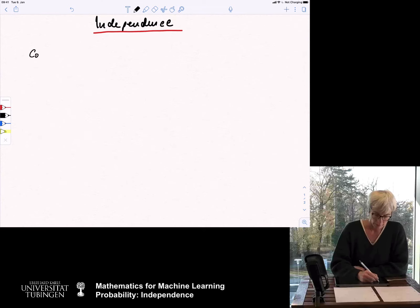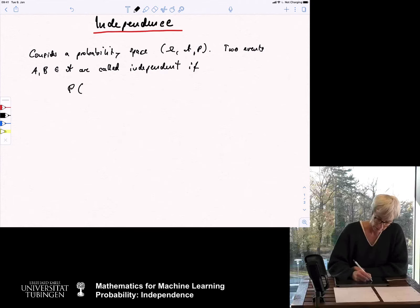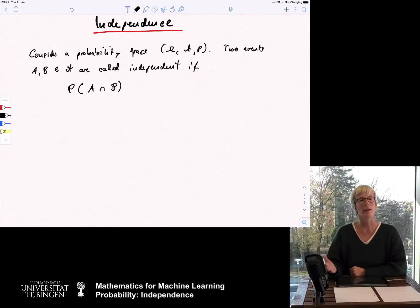So again, we consider a probability space. As always, this is the space omega a p. And we now consider two events. Two events, a and b, both of the sigma algebra are called independent if we have the following property. We look at the probability that a and b occur. The intersection is the and sign. So we look at the probability that a and b occur at the same time. And then this is supposed to be the same as the probability of a occurs times the probability that b occurs.